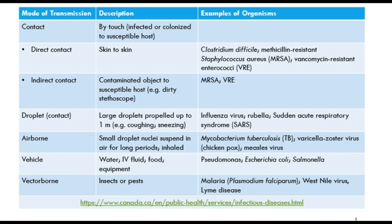Transmission through vehicle involves water, food, or equipment. Vector-borne transmission is through insects or pests — for example, malaria or West Nile, transmitted through a mosquito. It's very important to match the type of infection to the correct precaution. For example, MRSA requires contact precautions, and influenza is droplet. Knowing this will be critical moving forward in the course and for the test.